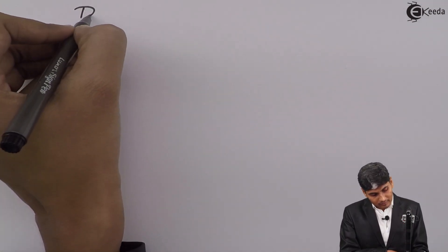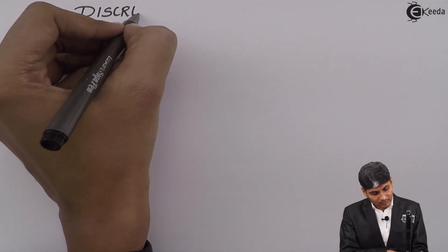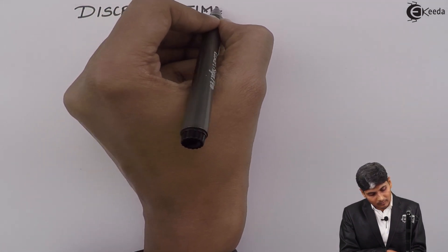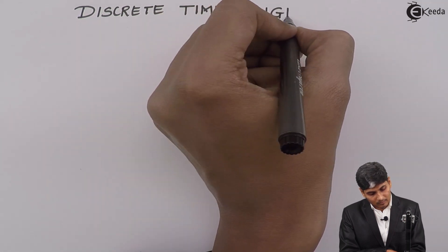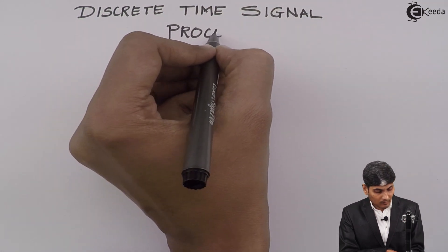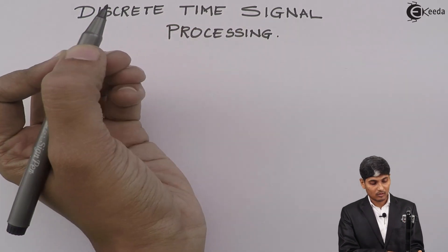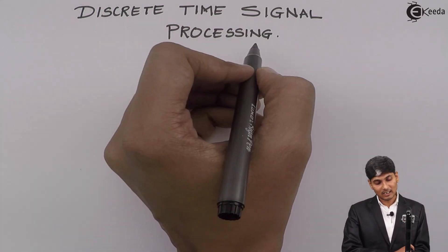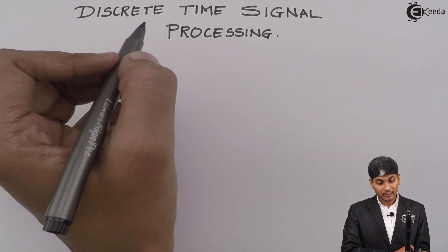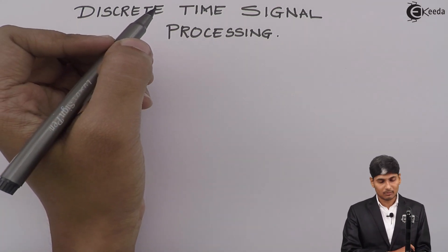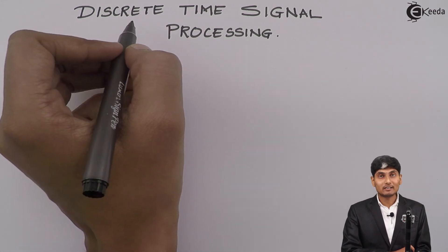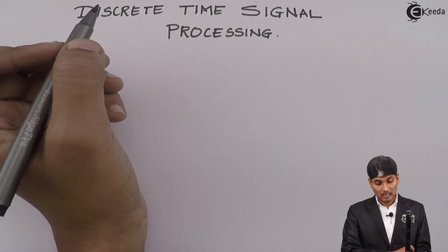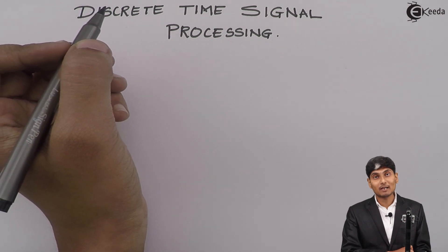Hello friends, today we are going to see a new topic called discrete time signal processing. We see here that there is a type of processing on a special type of signal which we call discrete time signal. Let us first understand what we mean by discrete time signal.